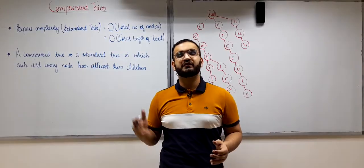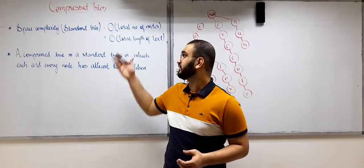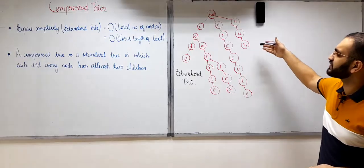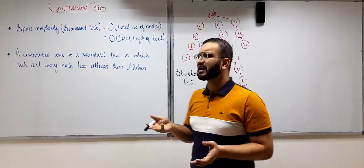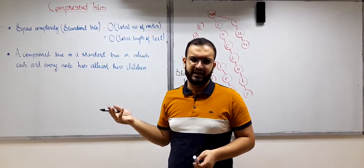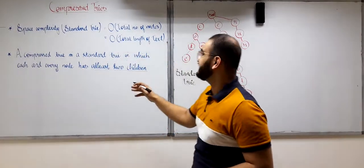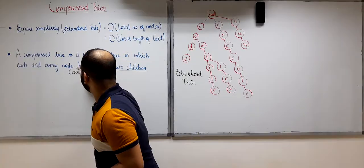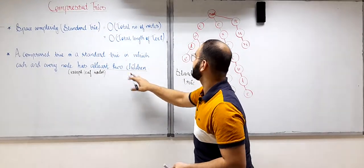First we will see what compressed tries are, with an example, and then I'll prove how compressed tries reduce the space complexity drastically. A compressed try is also a standard try, but with a condition: each and every node — except leaf nodes — must have at least two children. Leaf nodes of course have no children, so each and every internal node should have at least two children.